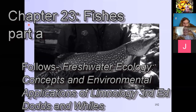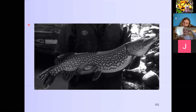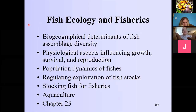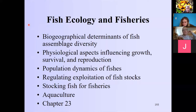We're now in the next chapter and we're going to talk about fishes and how they relate to this class in freshwater ecology. The first topic is geographical determinants of fish assemblage diversity, then physiological aspects influencing growth, survival, and reproduction — which applies to other animals and even microbes. We'll also cover population dynamics and how we can regulate exploitation of fish stocks, and whether we should stock fish for fisheries and aquaculture.